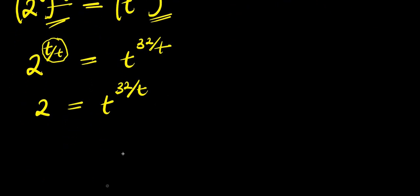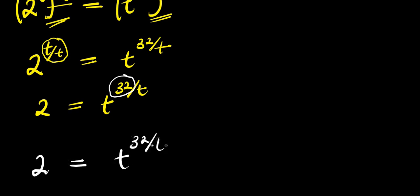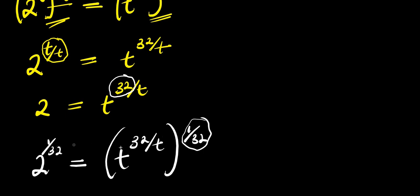The next thing we are going to do is also eliminate the 32 that we have here. We need to eliminate that 32. So for us to achieve that, we are going to multiply the exponent again by 1 over 32 this time around. So I am going to have 2 equals t to the power of 32 divided by t, and I am going to multiply it by 1 over 32. Since I have 1 over 32, I can also multiply this exponent by 1 over 32. So let's go back to the same index rule of a to the power of n, all to the power of m, equals a to the power of n times m.